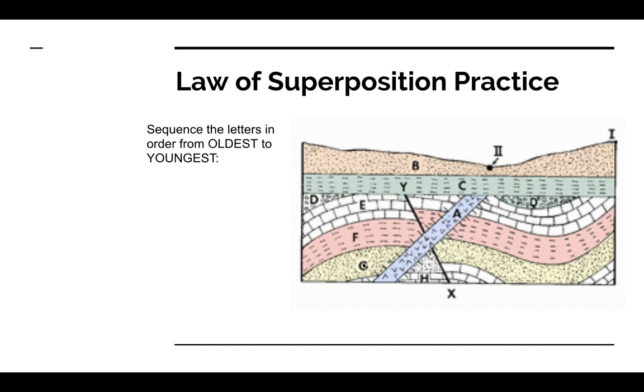followed by G, then F, then E, then D. Now here's where it gets a little tricky. You can see that those layers are kind of wavy. That's probably due to compression of the rock. But here's where you have to look very carefully. What comes next?